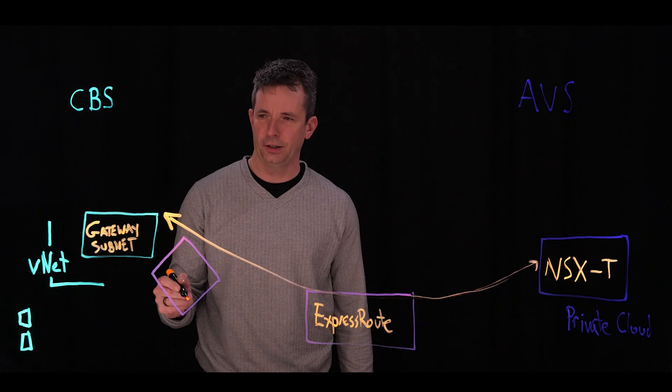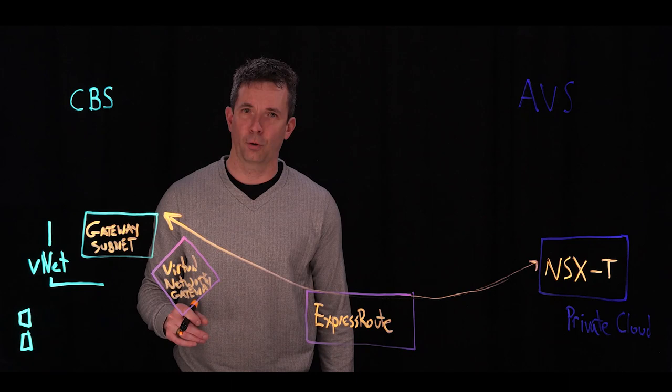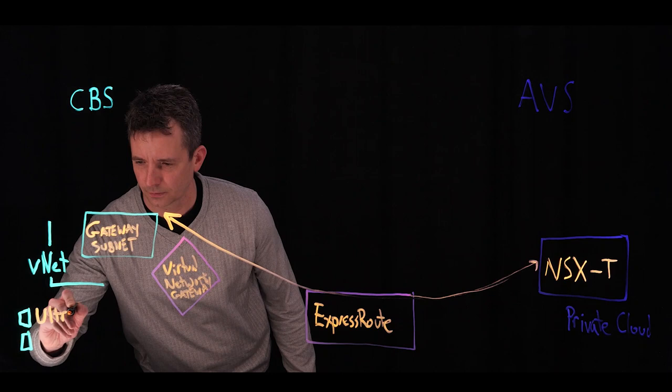Now that gateway subnet is important because we're going to connect that up to a virtual network gateway. Now when you go to deploy that virtual network gateway, it's extremely important from a performance perspective that you place it in the UltraSkew.